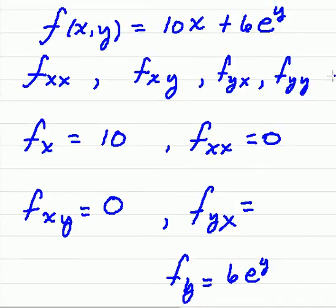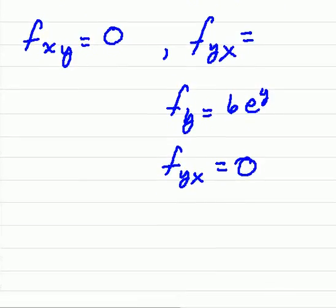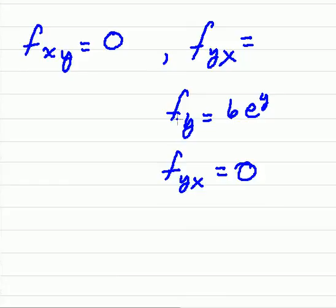And now the last, f_yy. So the derivative of f_y. The derivative of f_y is 6e to the y. And therefore, the derivative of it with respect to y, once again, is just 6e to the y.